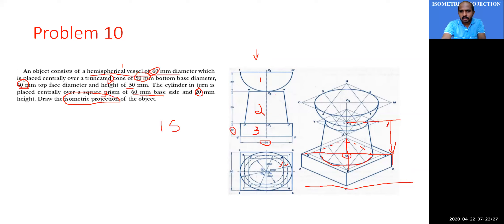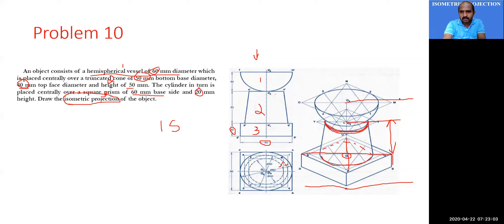Locate O2 such that O1 to O2 equals the isometric length corresponding to 50 mm. At O2, draw the isometric projection of the top surface of the truncated cone.